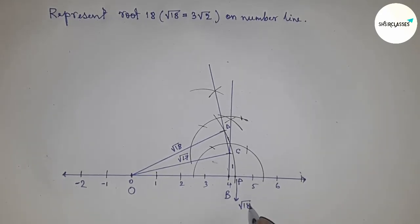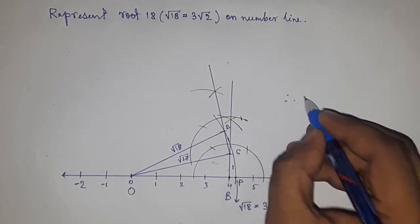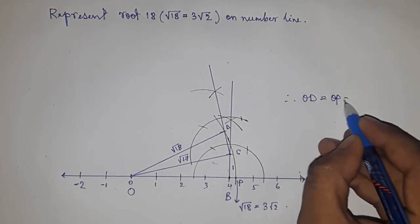This is the representation of √18 on the number line, or 3√2. Therefore, OD = OP = √18 = 3√2.